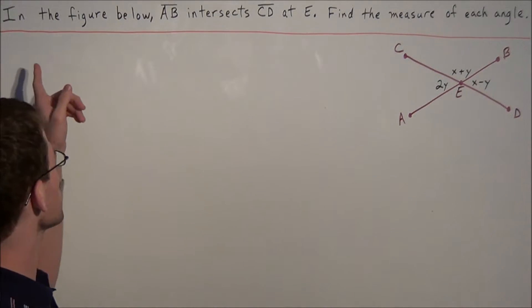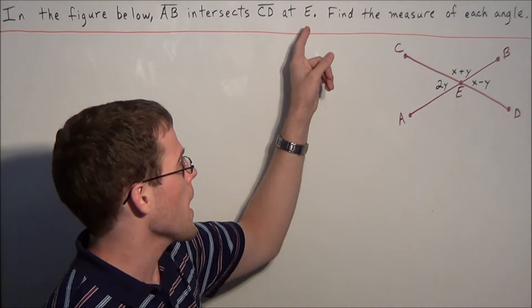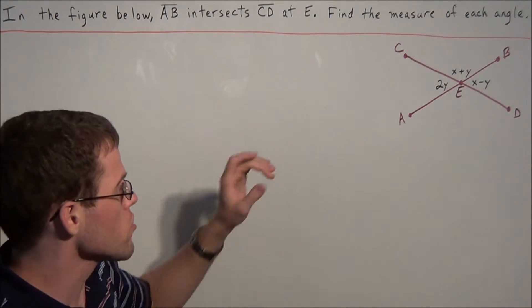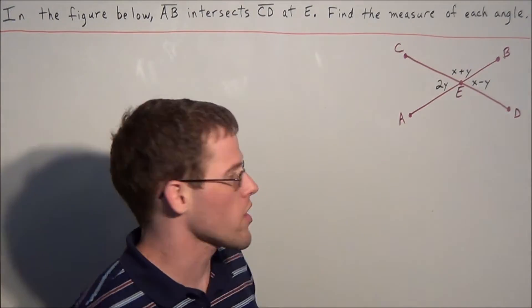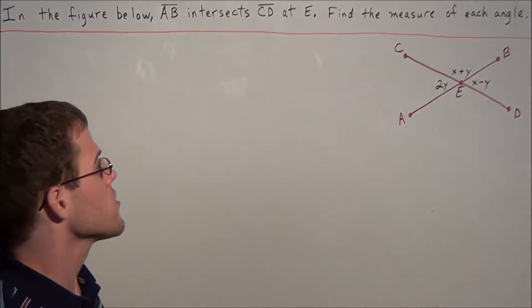We have the problem: in the figure below, line segment AB intersects line segment CD at point E, and we need to find the measure of each angle. Notice that the angles we're looking at are in terms of two variables, X and Y.